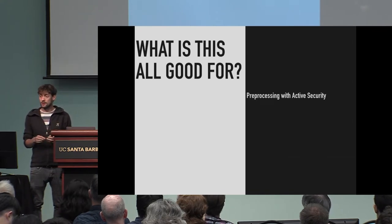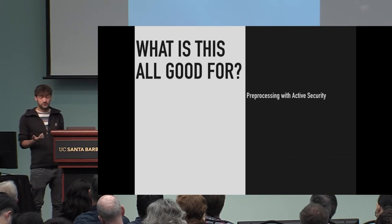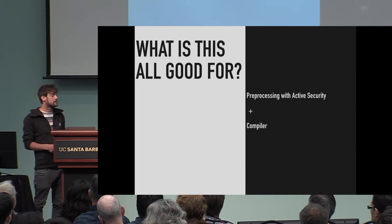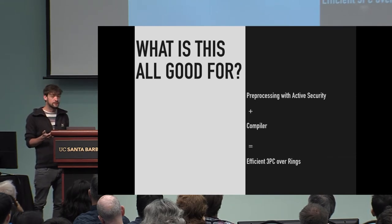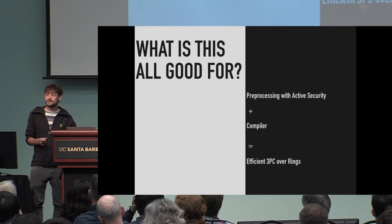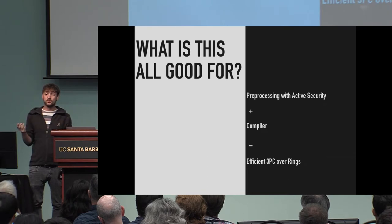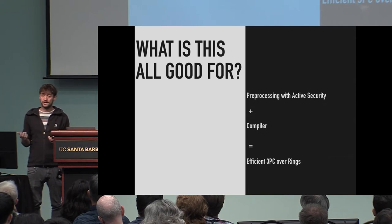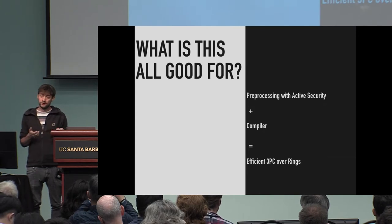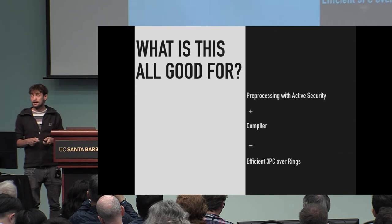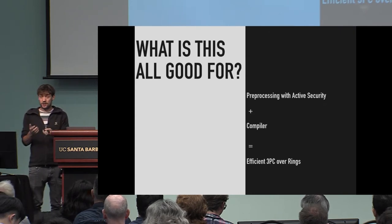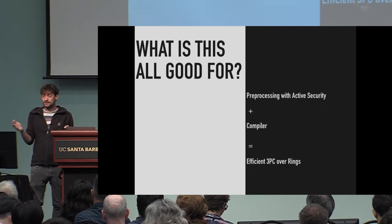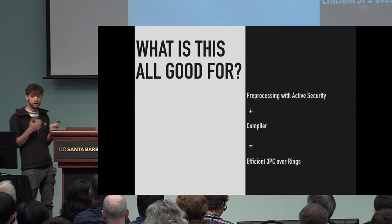We took a specific protocol to see how efficient our compiler gets. We focused on Beaver's circuit evaluation approach, which requires a preprocessing phase. We design a preprocessing phase with active security, apply our compiler to the online phase, and get an efficient 3PC over rings. Over rings is interesting because when we consider semi-honestly secure protocols we can work over many domains — fields, binary circuits, rings. It's quite challenging to get active security over a ring using MACs. But since the compiler doesn't use any MACs, if you start with a semi-honestly secure protocol over rings, the actively secure protocol will work over rings just fine — the only thing you do is send values redundantly, without exploiting any underlying algebraic structure.